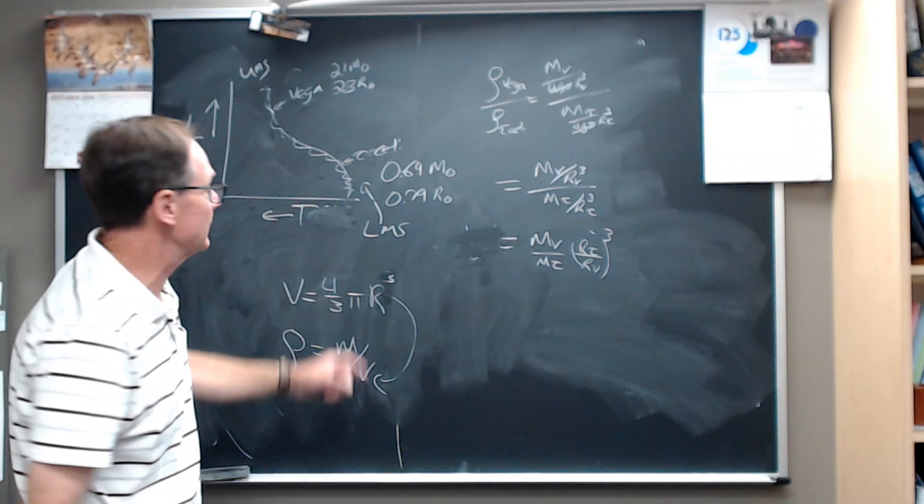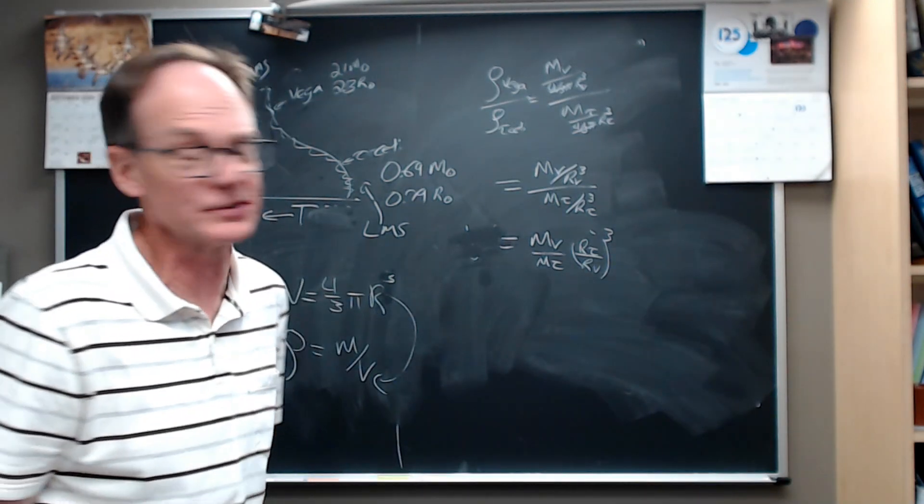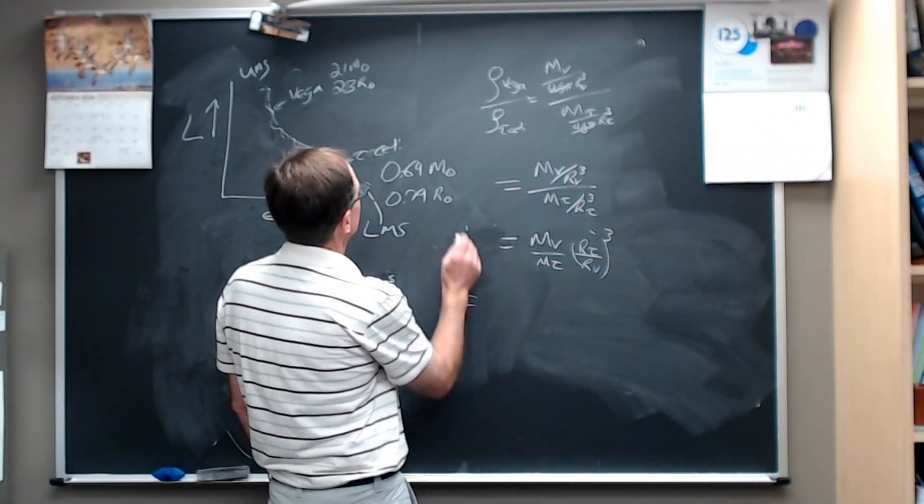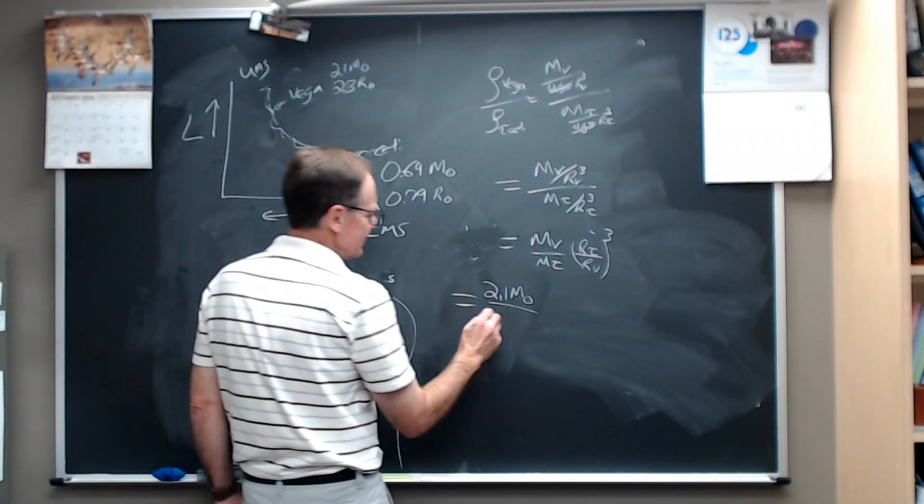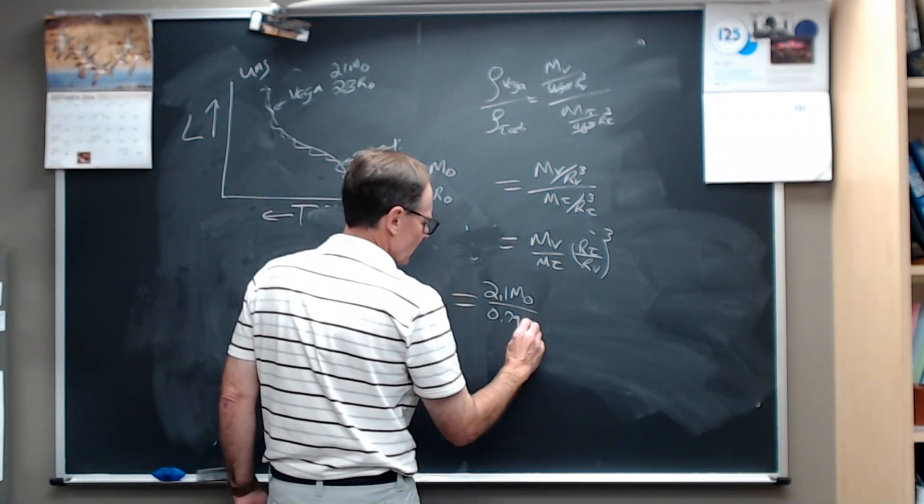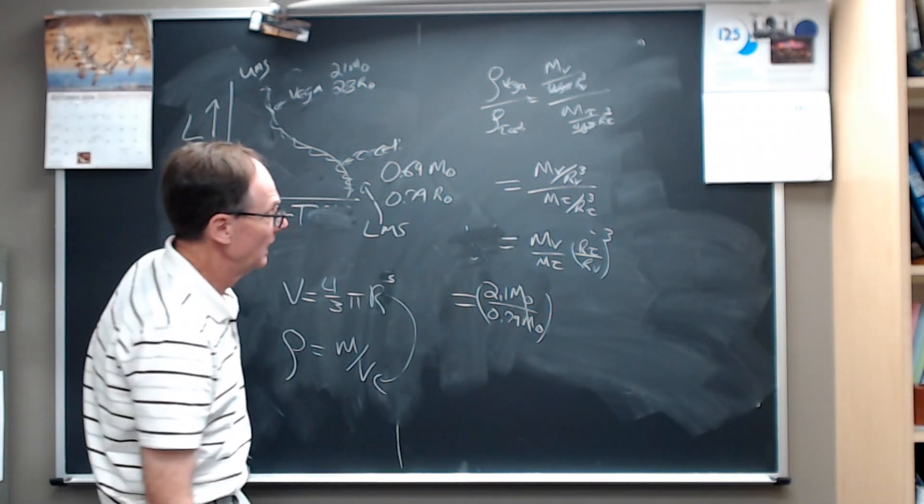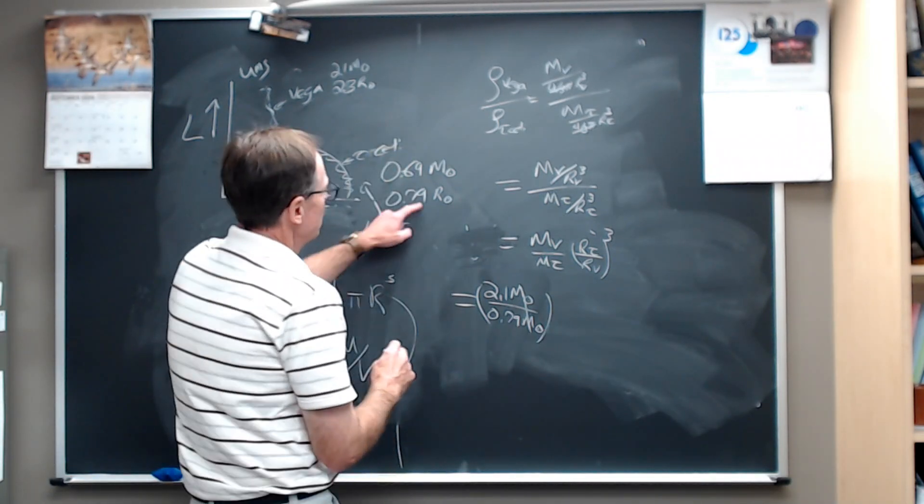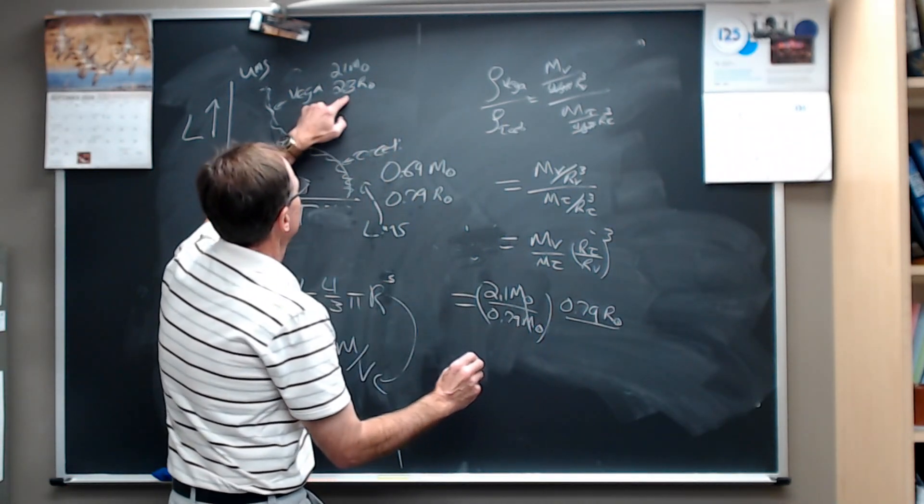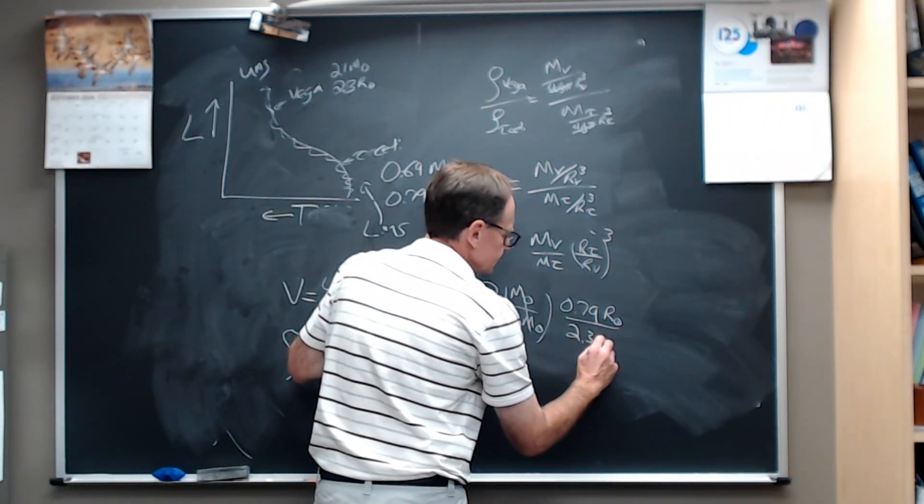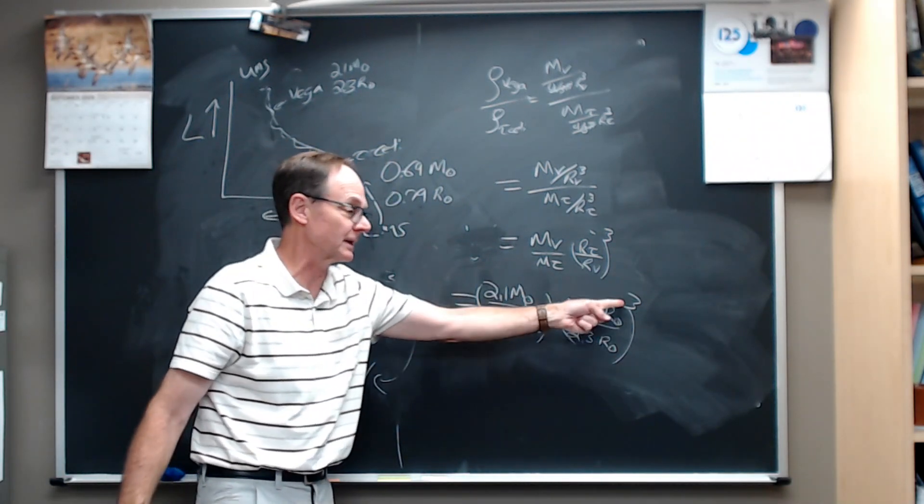And I've written down here, I looked these up, I didn't know these, I looked these up, what the masses and the radius of these stars are in solar units compared to the sun. So we've already done a scaling relationship to get these out of here. But this is equal to then 2.1 solar masses divided by 0.79 solar masses times the solar masses cancel out. We're just going to get a ratio here. We're not going to have any units left over on the end. Times 0.79 solar radii divided by 2.3 solar radii cubed. Now you see that this is going to affect this calculation a lot more than this is because of that cube that goes in there.